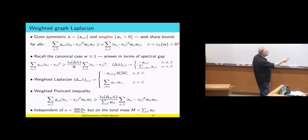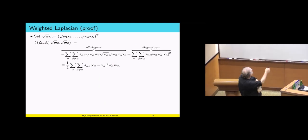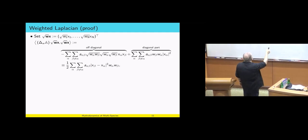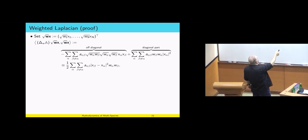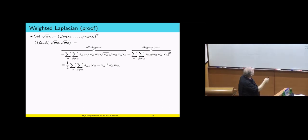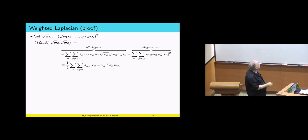Let's see why this is true. We take this weighted Laplacian and look at an arbitrary weighted vector. We consider the inner product between this weighted Laplacian and an arbitrary weighted vector. When you sum up all terms — off-diagonal and diagonal — lo and behold they just fit, and you get one-half the sum over alpha, beta different from alpha of A alpha beta (X beta minus X alpha) squared times W alpha W beta. This is exactly the quantity I want to lower bound.